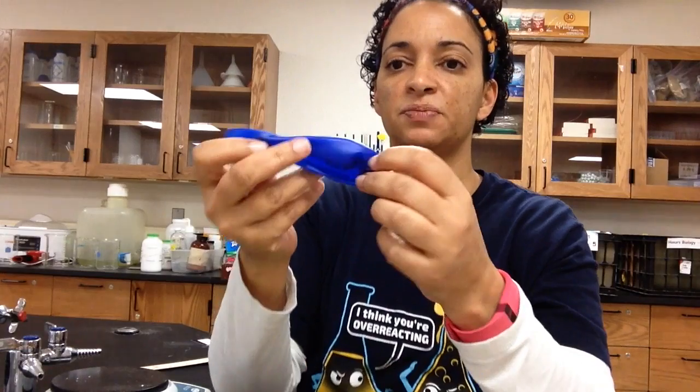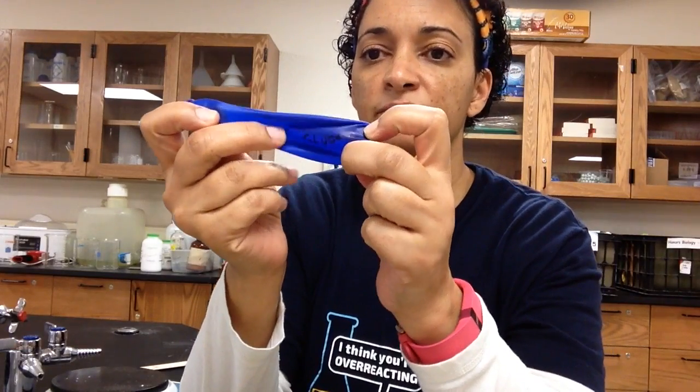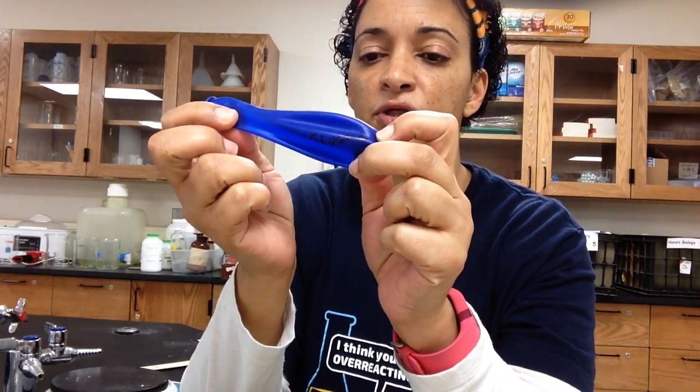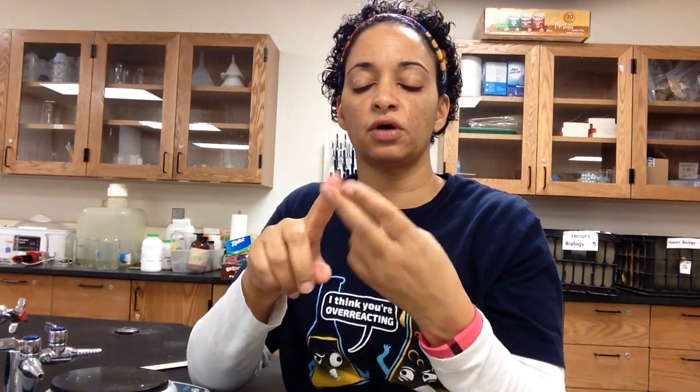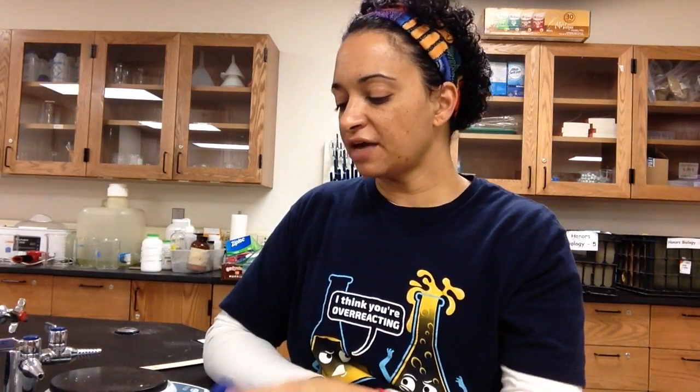First thing I'm going to do when I get to the back is get my balloons and label them. I've labeled this balloon here as glucose. I'm going to label my balloons: glucose, sucrose, lactose, dextrose, and then water — because that's going to be our control.